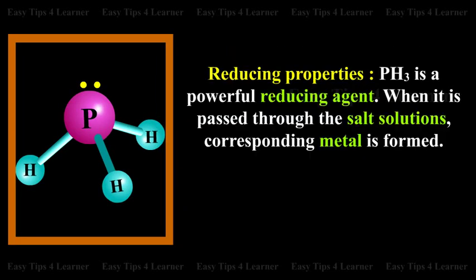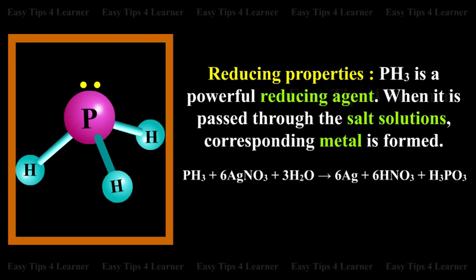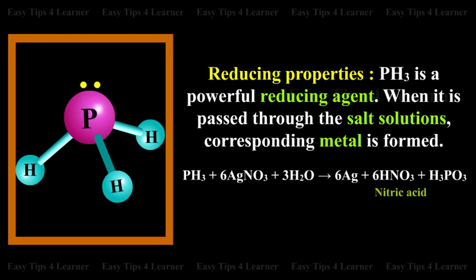Reducing Properties: PH3 is a powerful reducing agent. When it is passed through salt solutions, the corresponding metal is formed. For example: phosphine + silver nitrate + water gives silver + nitric acid + phosphorous acid.